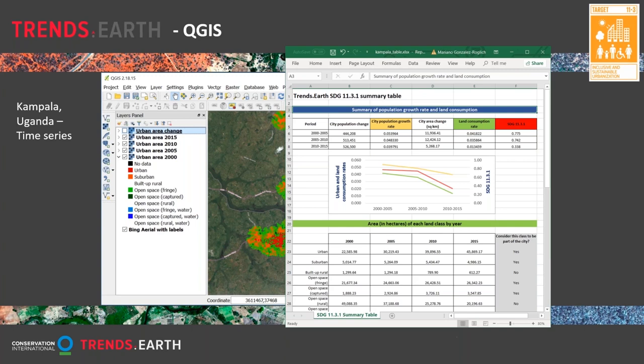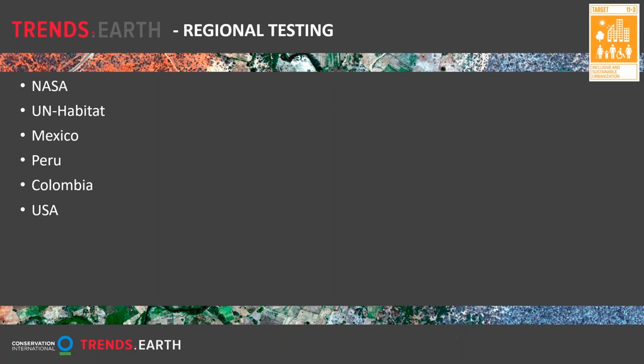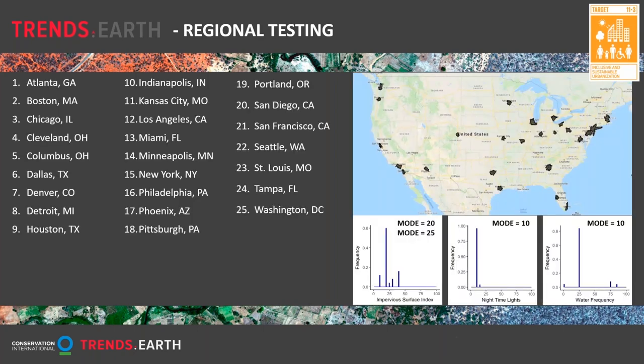The final output of the tool includes a map summarizing SDG 11.3.1 for the periods 2000-2005, 2005-2010, and 2010-2015, along with information summarizing population within each different type of urban extent — urban, suburban, built-up, and open space. The tool is still undergoing testing. NASA is working to test it within the United States using existing data, and we're also working closely with UN Habitat and partners in Mexico, Peru, and Colombia. For 25 US cities, we've been comparing values for the impervious surface index, nighttime lights, and water frequency to guide the default values of these parameters.